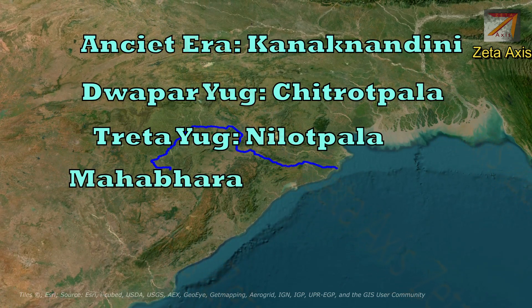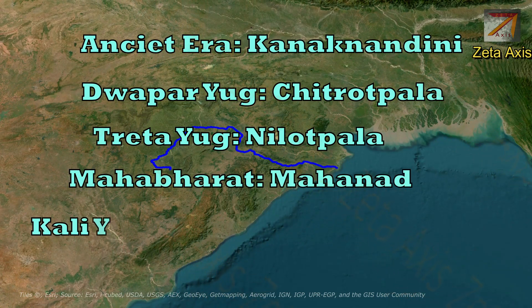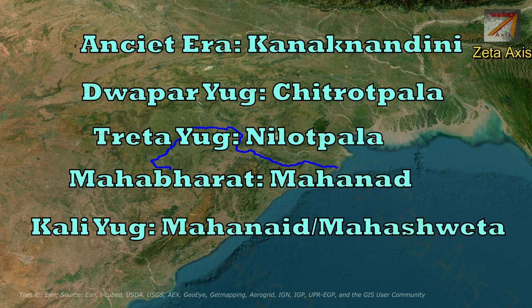In Mahabharat, it is called Mahanad, while in Kalyug, it is called Mahanadi or Mahasweta.